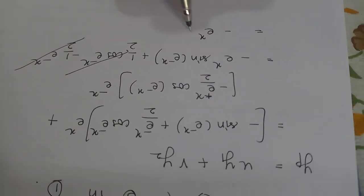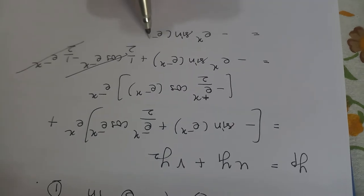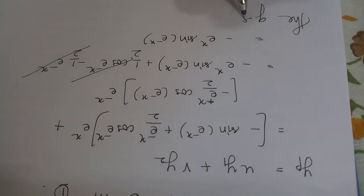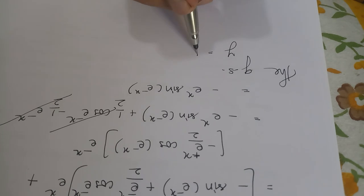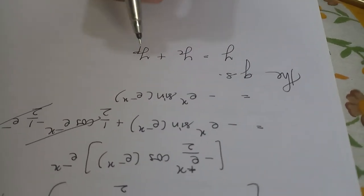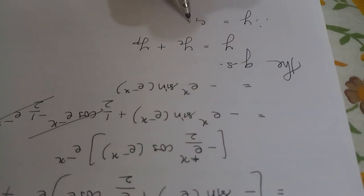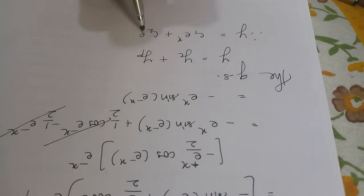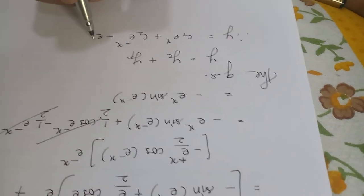You are left with yp equals minus e raised to x sin of e raised to minus x. The complete solution of the differential equation is y equals yc plus yp, that is y equals c1 e raised to x plus c2 e raised to minus x minus e raised to x sin of e raised to minus x.